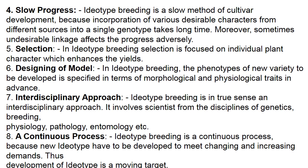Idiotype breeding is a slow method of cultivar development because incorporating various desirable characters from different sources into a single phenotype takes a long time, and sometimes undesirable linkage adversely affects progress. Selection is focused on individual plant characters that enhance yield. The phenotype of the new variety is specified in advance in terms of morphological and physiological traits. It is an interdisciplinary approach involving scientists from different disciplines and is a continuous process as new idiotypes must be developed to meet changing demands.